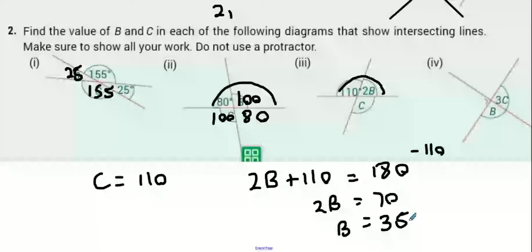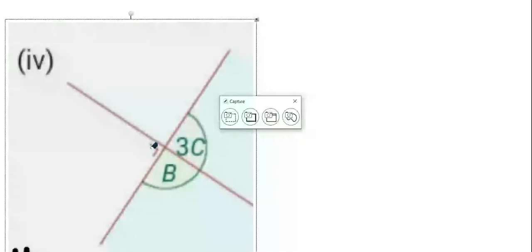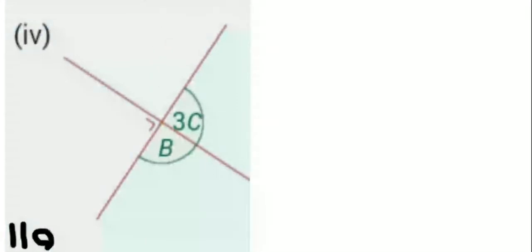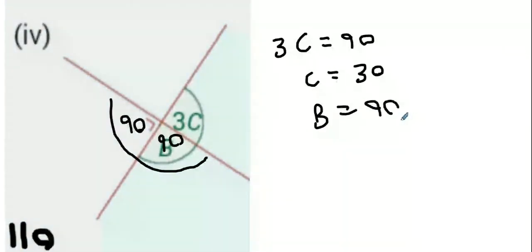Next thing after that is part 4. Now if you look at part 4, that's 90 isn't it? That means 3C equals 90, and then C will equal 30. And we already know that B has to be 90. Why? It's the same line, so it has to be 180.